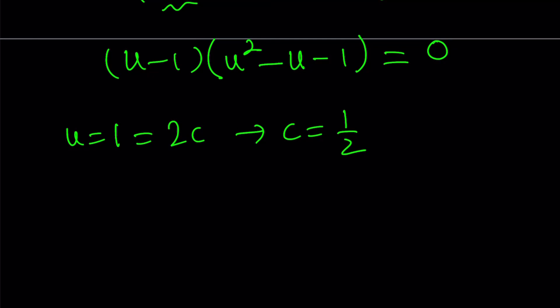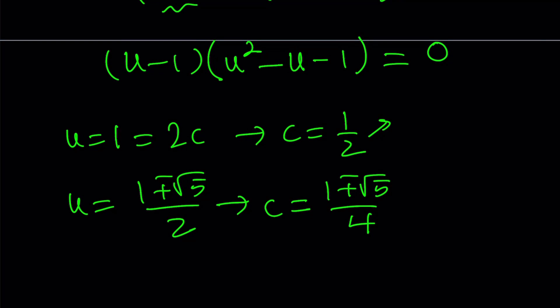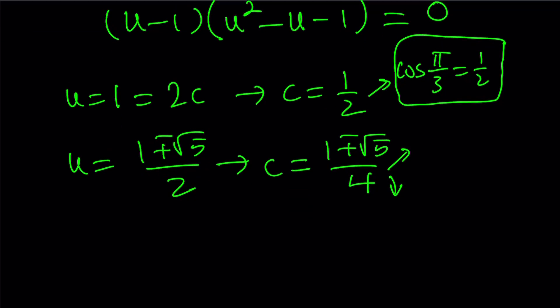What about the other solutions? Well, the quadratic gives me 1 plus minus the square root of 5 over 2. Hopefully, this number is familiar to you. And divide by 2. You get 1 plus minus square root of 5 divided by 4. Now, these values should be familiar to you, both of these numbers, but the division by 4 actually gives you something nicer trigonometrically.